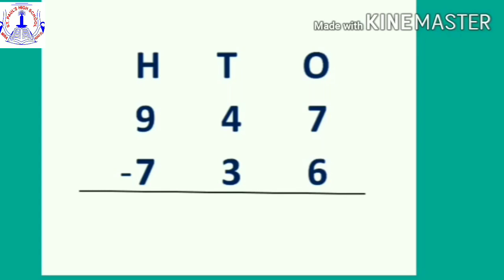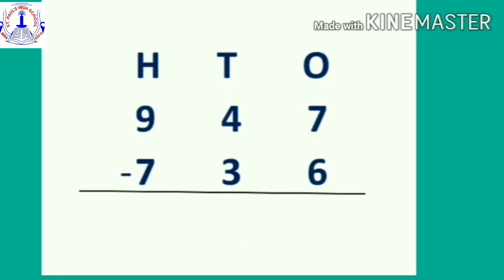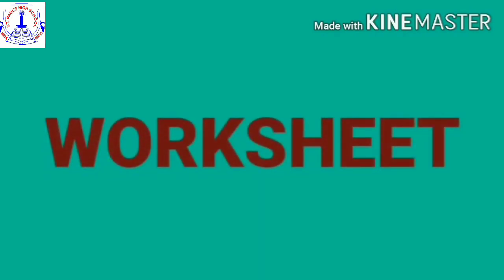Write the digits according to their places: ones, tens, and hundreds. From the ones place: 7 minus 6 is 1. Tens place: 4 minus 3 is 1. Hundreds place: 9 minus 7 is 2. So the answer is two hundred and eleven chocolates.